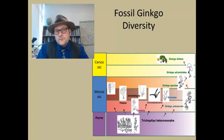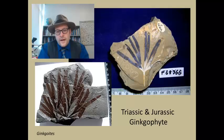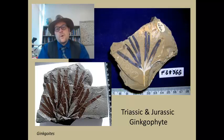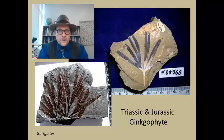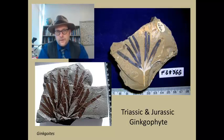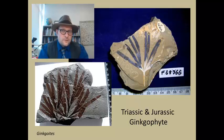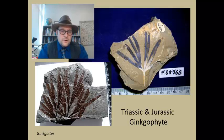Let's look at some of these more modern fossil ginkgos in the Mesozoic era. Here we have the Triassic and Jurassic fossil Ginkgoites, which is extremely widespread — it is known from every continent, even Antarctica. Most of the other ginkgos we have looked at are restricted to the Northern Hemisphere. That is not the case with Ginkgoites, which has been found across South America, Africa, Australia, and Antarctica, as well as specimens from Europe and Asia, with a few fossils known from North America.